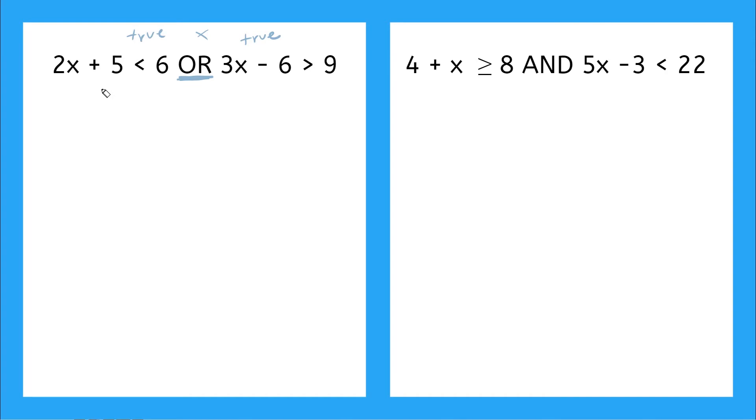So starting with this one over here, I'm going to subtract 5 from both sides of my inequality, because I'm trying to get X all by itself. So I have 2X is less than 6 minus 5 is 1. Now I'm going to divide both sides by 2. And I get X is less than 1 half. So one set of solutions is when X is less than a half. My other set here, I'm going to add 6 to both sides of my equation. I get 3X is greater than 9 plus 6. That is 15. And then I divide by 3 here and here. And I get X is greater than 5.